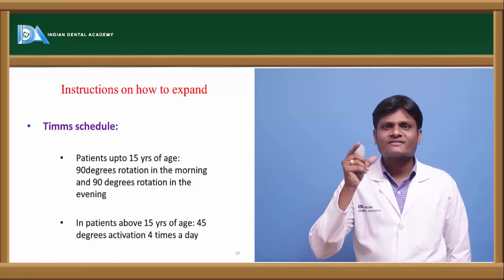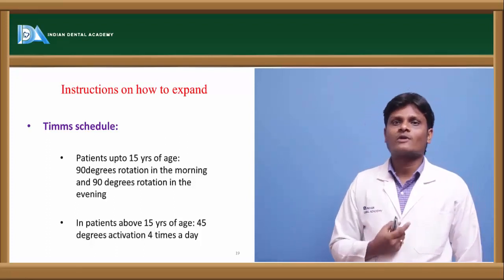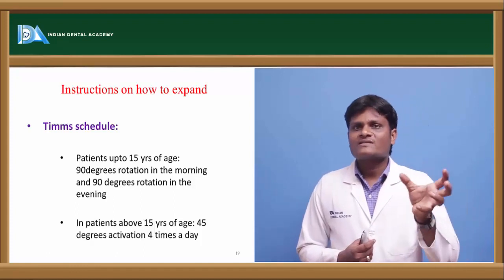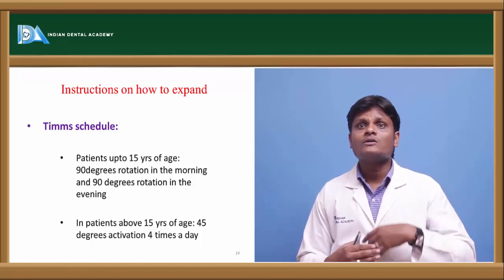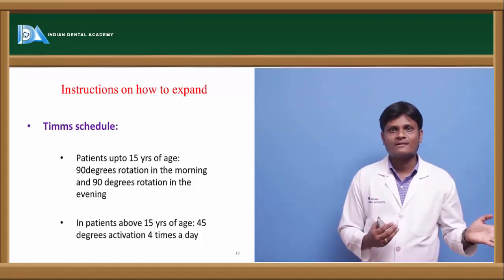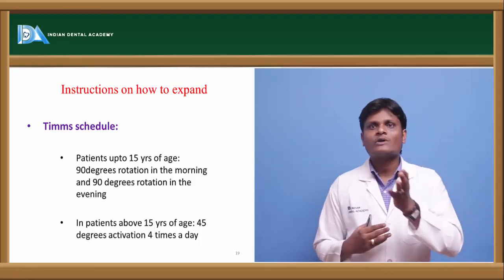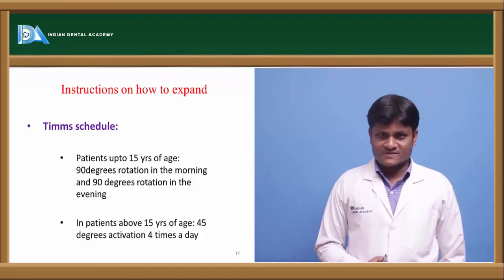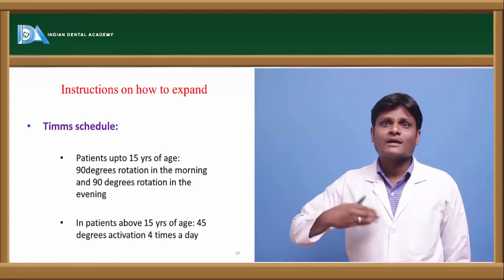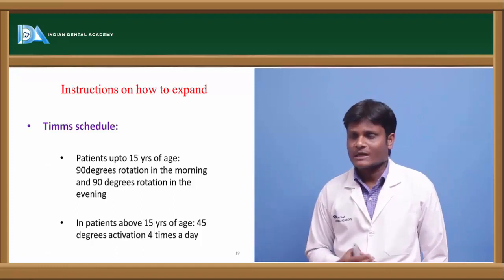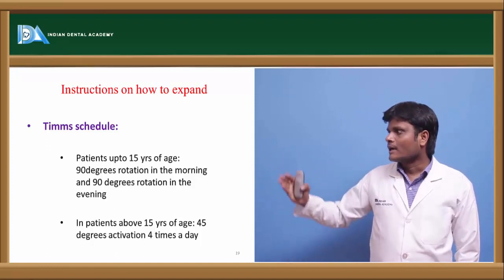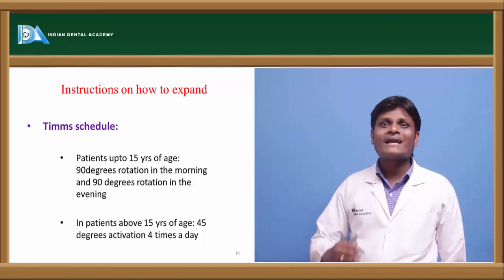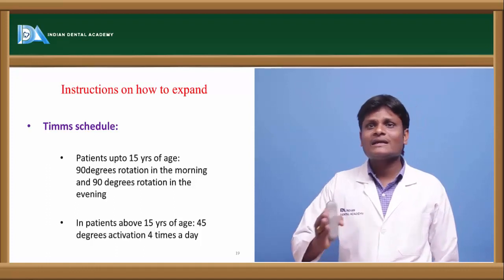Once a Hyrax screw is fixed — mainly used for rapid maxillary expansion — a strict protocol must be followed to activate the appliance. According to the TIMSS schedule, in patients up to 15 years of age, 90 degrees rotation in the morning and 90 degrees rotation in the evening should be done, that means 180 degrees per day, divided into 90 degrees in the morning and 90 degrees in the evening.